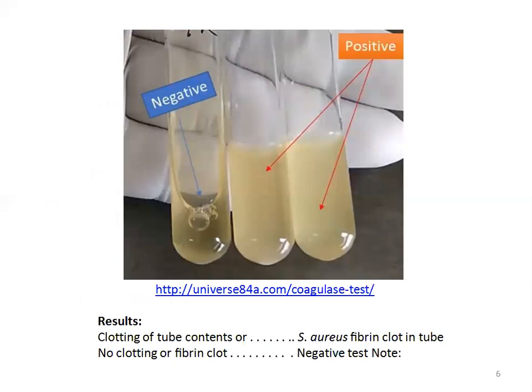When looking for clotting, tilt each tube gently to observe the results. Clotting of the tube contents indicates Staphylococcus aureus; no clotting or absence of fibrin shows a negative test. It must be noted that there should be no clotting in the negative control.